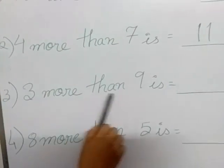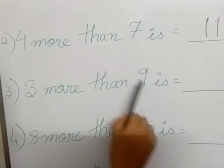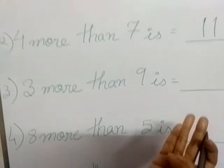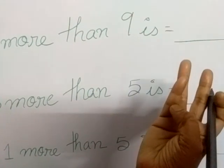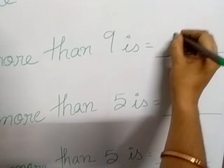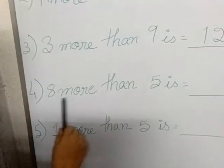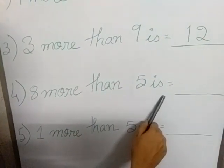Now 3 more than 9 is 9 plus 3. 9, 10, 11, 12.